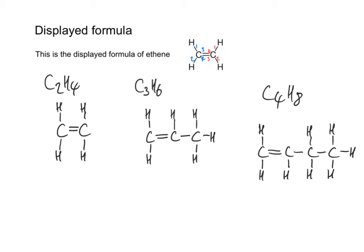Once I've finished, I can check everything by checking my diagram against the molecular formula. I've got four carbon atoms — one, two, three, four. And I should have eight hydrogens — one, two, three, four, five, six, seven, eight. So I've drawn that correctly.